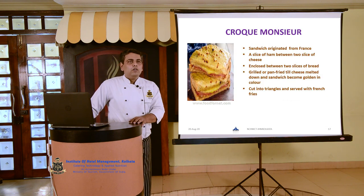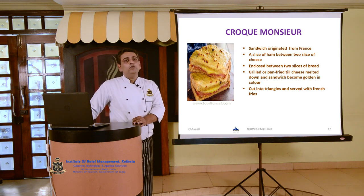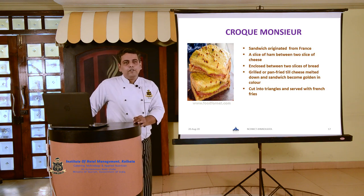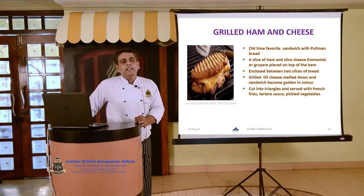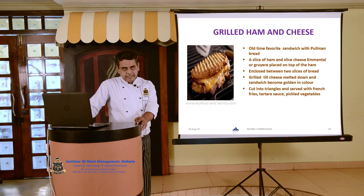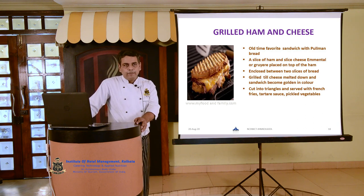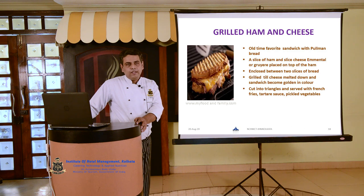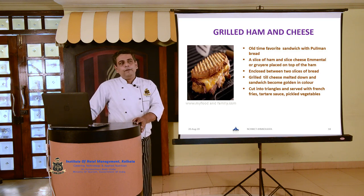The next category is croque monsieur, a sandwich from France — a slice of ham between two slices of cheese enclosed between two slices of bread. It is grilled or pan-fried till the cheese is melted and the sandwich becomes golden in color, then cut into triangles and served with French fries. Next is grilled ham and cheese, an old-time favourite sandwich with pullman bread. A slice of ham and a slice of cheese — varieties such as Emmental and Gruyère — are enclosed between two slices of bread, grilled till the cheese melts and it turns golden, then cut into triangles and served with French fries and tartar sauce.